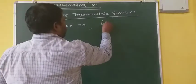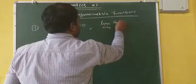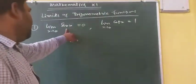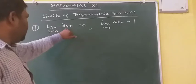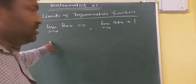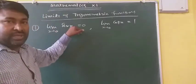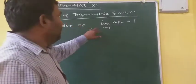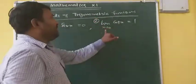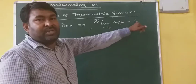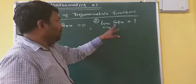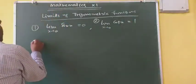And limit x tends to 0 of cos x will be 1. You can think: if you put x = 0, sin 0 will give you 0. That's why limit x tends to 0 of sin x equals 0. Similarly, the second formula is limit x tends to 0 of cos x equals 1, since cos 0 is 1.